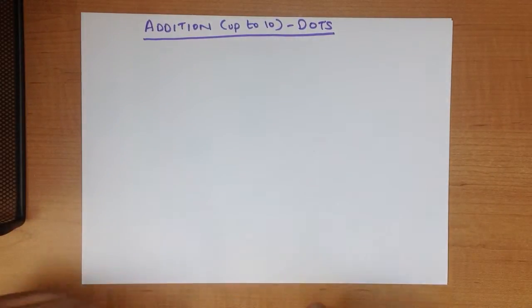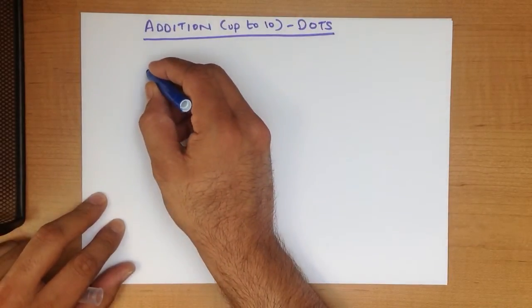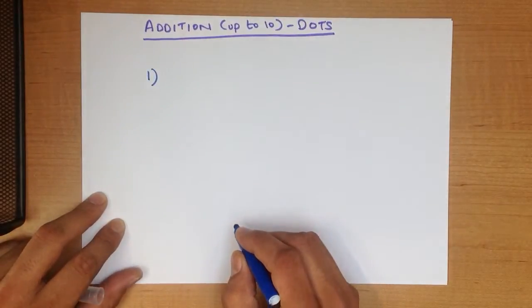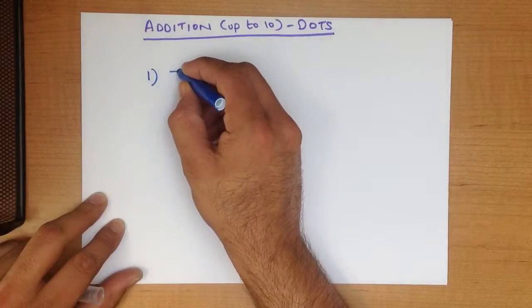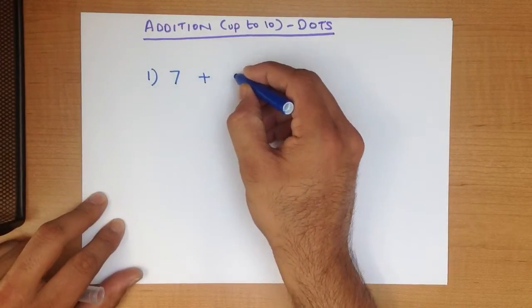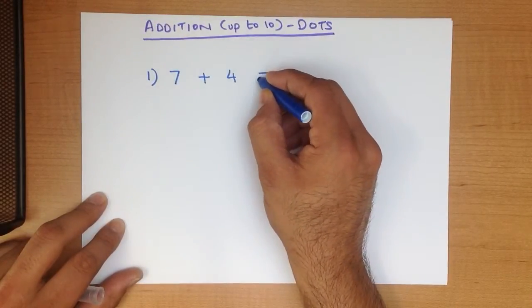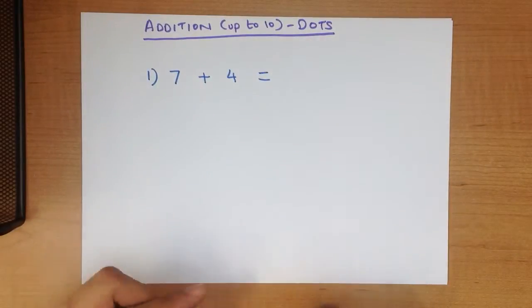So let's start with our first example. What is 7 plus 4? 7 plus 4.